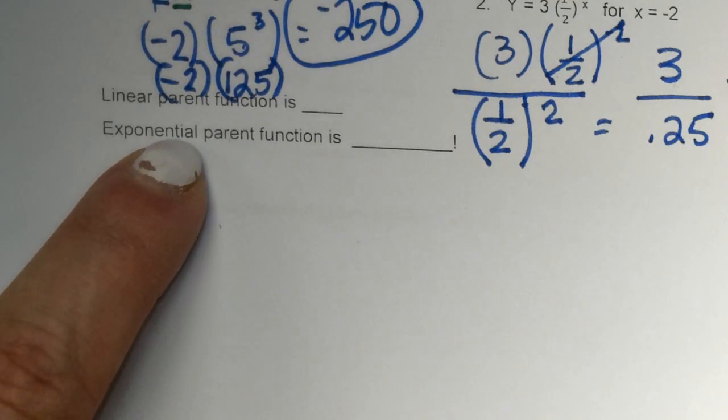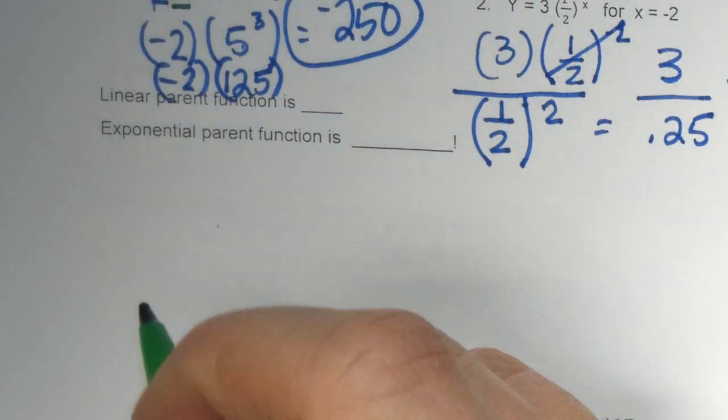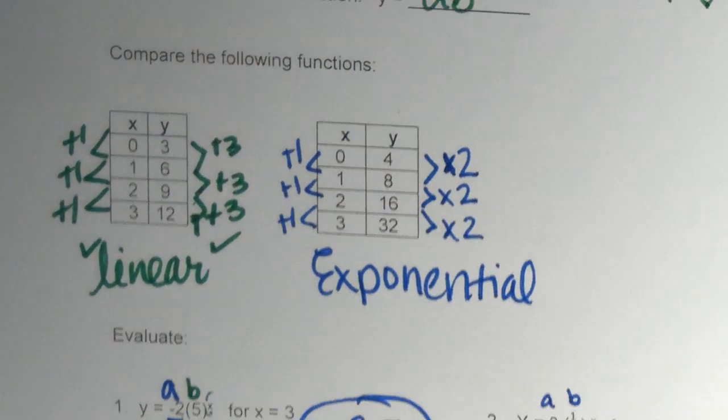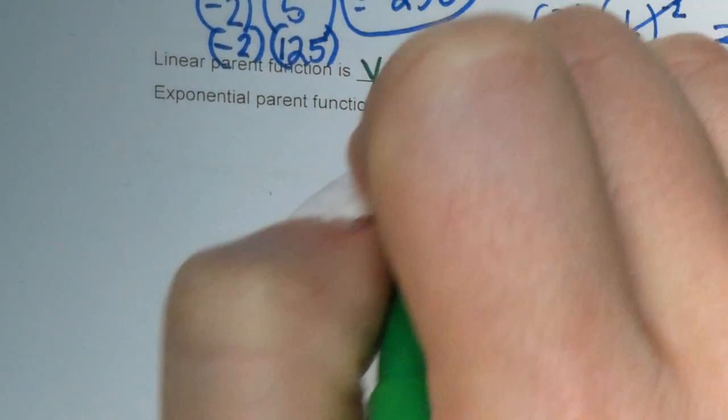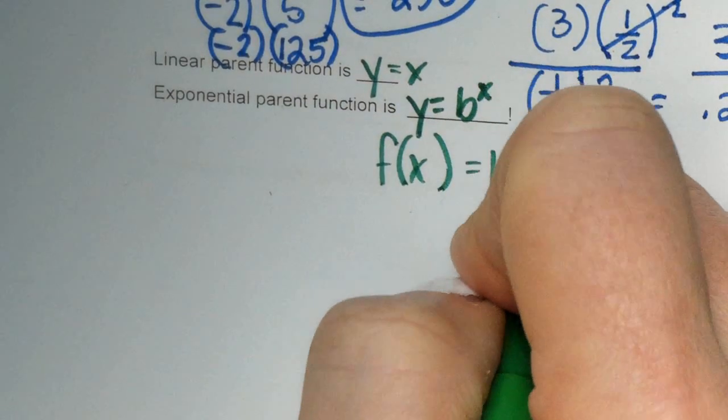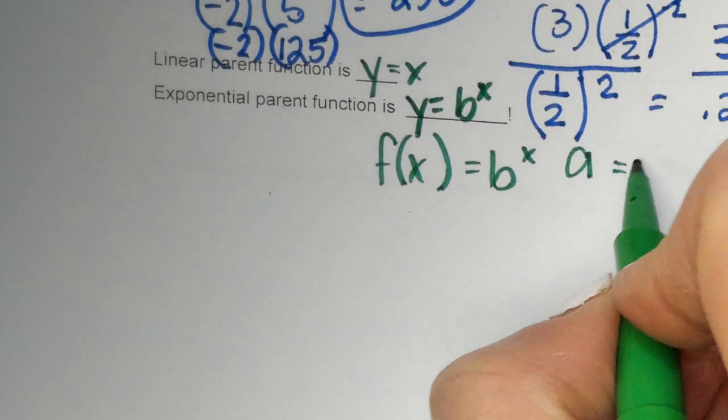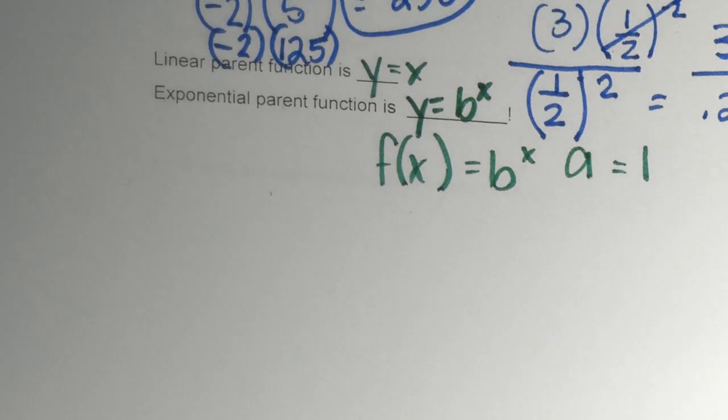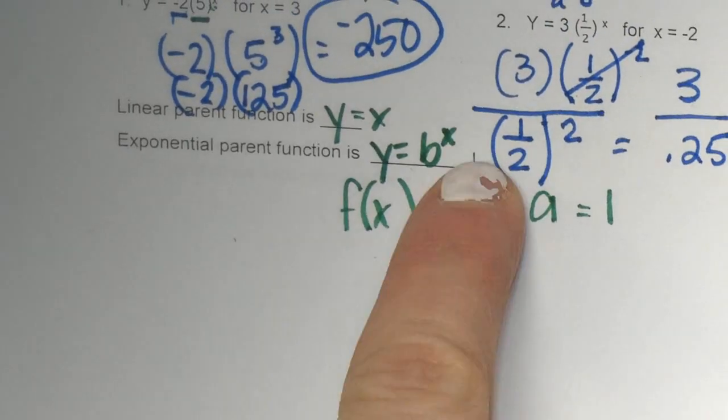Okay, so back to linear parent function here. Linear parent function is, the linear parent function is still y equals x, just like it was up here. Exponential parent function, y equals b to the x. You have to have an exponent. You can also write it this way, f of x equals b to the x. Because, you don't have to put the a in there, because the a is automatically understood as just being one. You don't have to have that in there, but, you can see the difference there. It has the exponent.